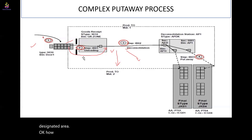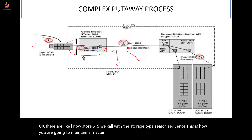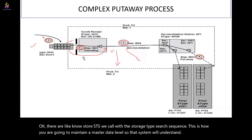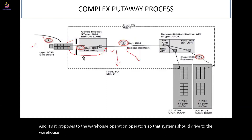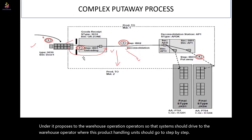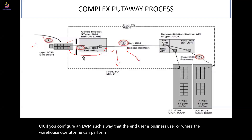The system knows where each product should go based on the storage type search sequence, which you maintain at the master data level. The system then proposes the location to the warehouse operator. If you configure EWM correctly, the system drives the warehouse operator step by step so that all activities can be performed in a simplified way without any problem.